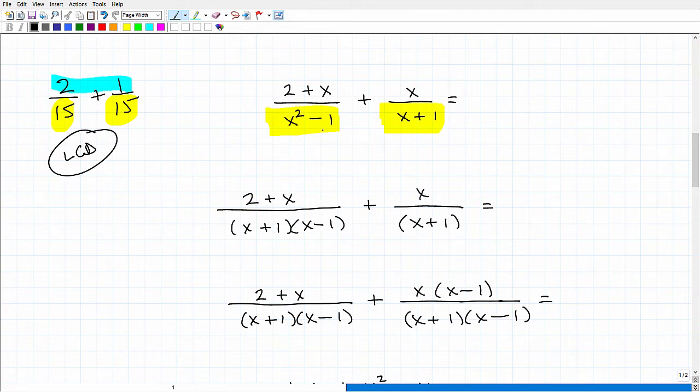So here, clearly, these are different denominators. So I need to go find the LCD. And in algebra, what you want to do is factor the respective denominators. So this x² - 1,